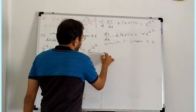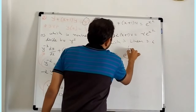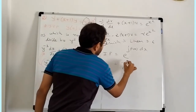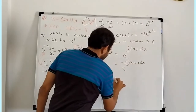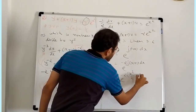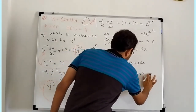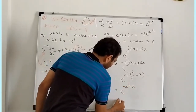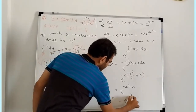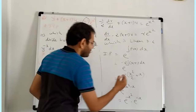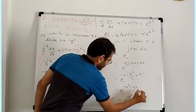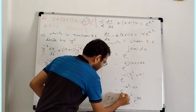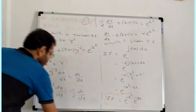Find the integrating factor: e raised to integral of P(x)dx, where P(x) equals minus 2(x+1). Integrating: e raised to minus 2·(x squared/2 plus x), which simplifies to e raised to minus x squared minus 2x. So the integrating factor equals e raised to minus x squared · e raised to minus 2x.